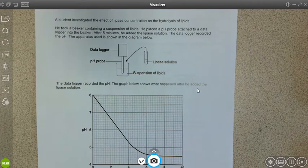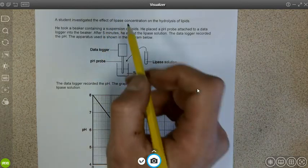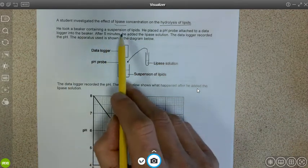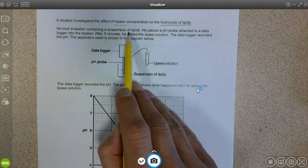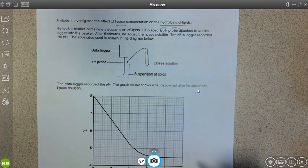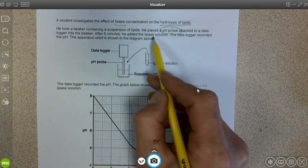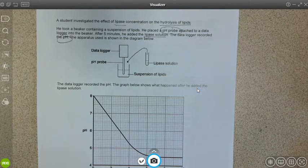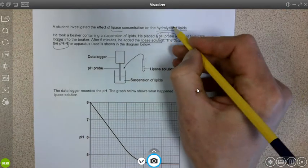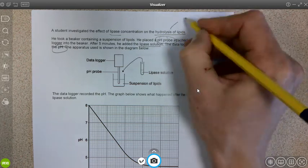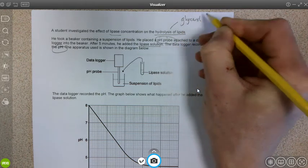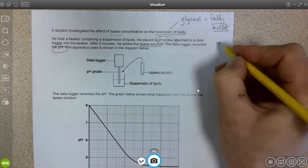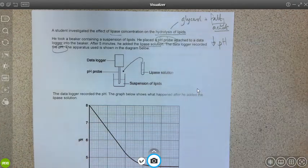Let's have a look at another one. In this, a student is investigating the effect of lipase on the hydrolysis of lipids. He took a beaker containing suspension of lipids, placed a pH probe attached to a data logger, after five minutes added the lipase solution, and the data logger recorded the pH.